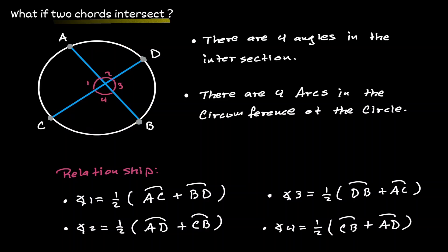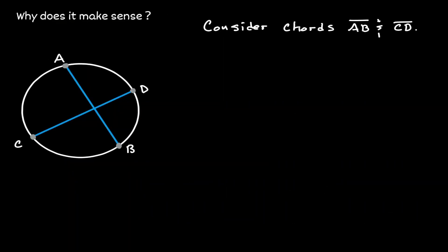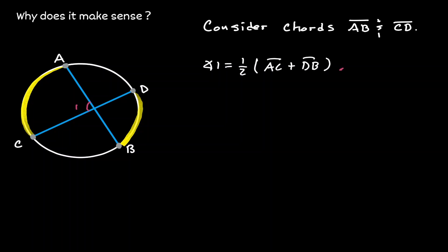Let's explain why this relationship is true by considering angle 1. We want to show why angle 1 equals half the sum of the opposite arcs. Let's consider a chord that connects point A and D. By doing so, we have created two other angles — let's call them angle 2 and angle 3 — and we have also created a triangle.